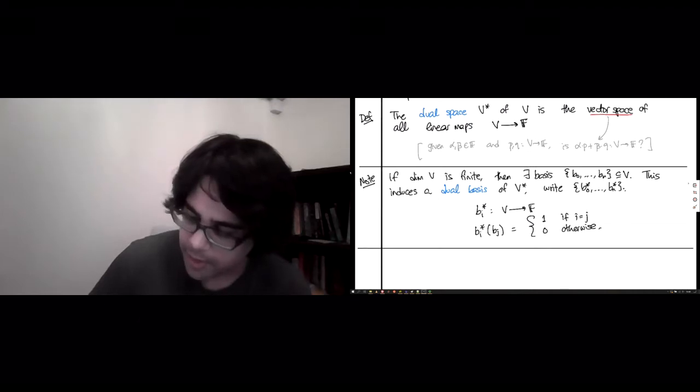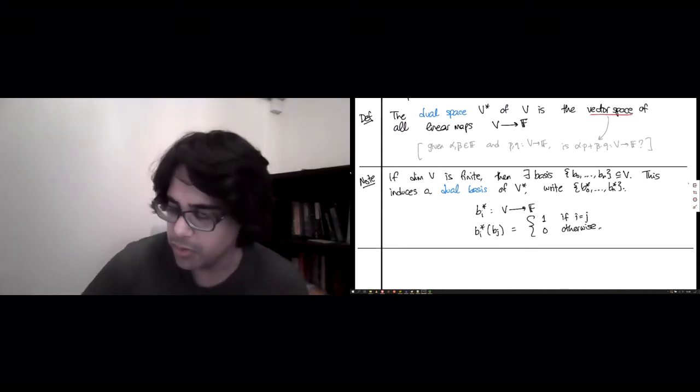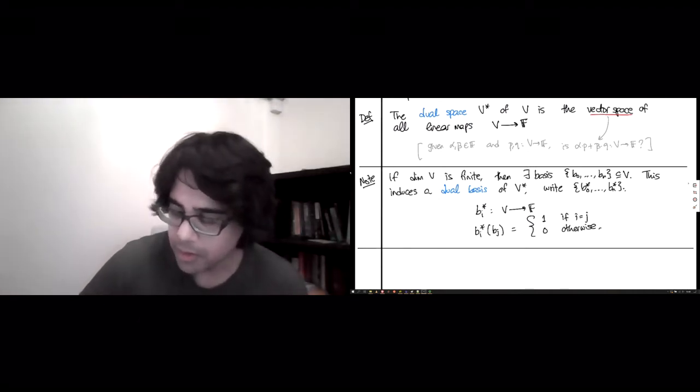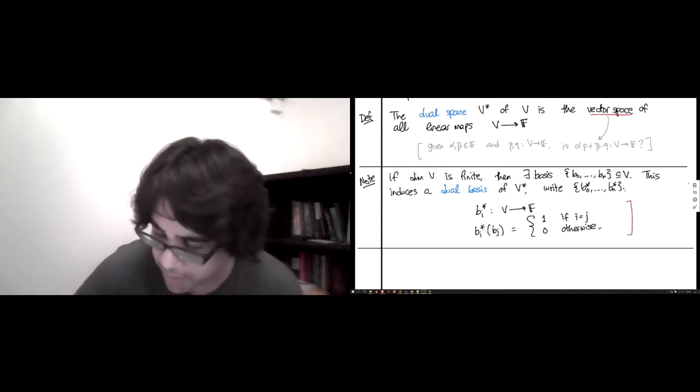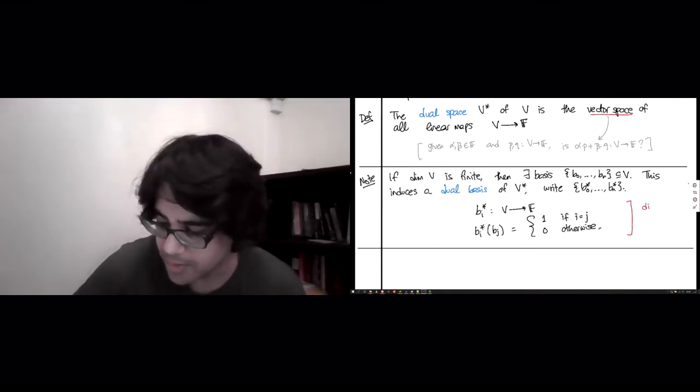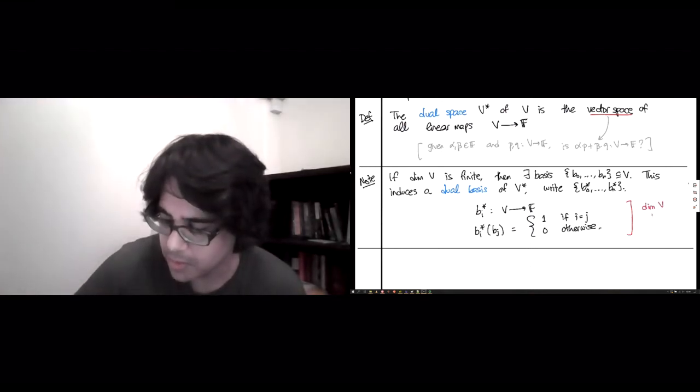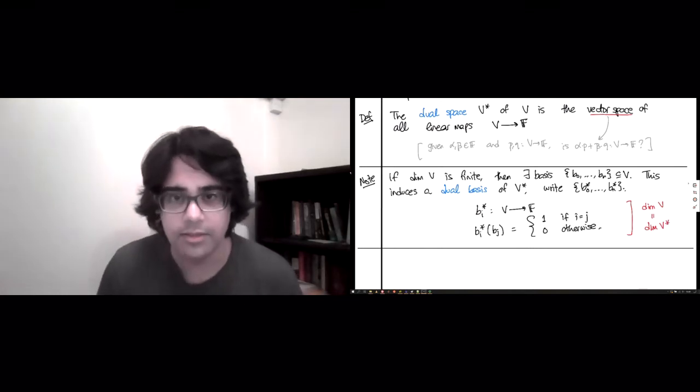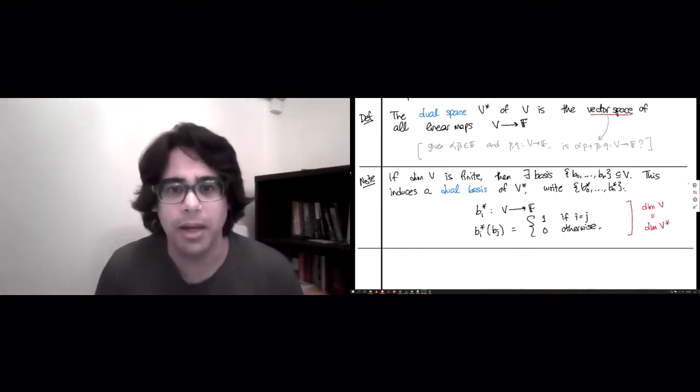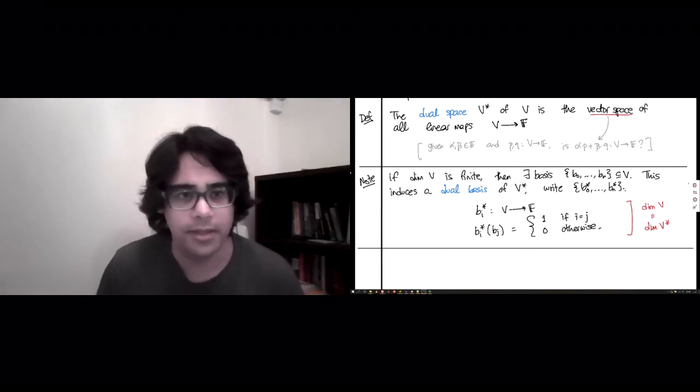The interesting thing here is you can conclude that dimension of V is dimension of V star when dimension of V is finite. I'm making no claims about infinite dimensional vector spaces and their duals here. That's a hairier topic.